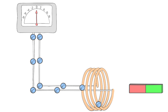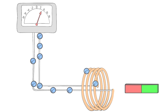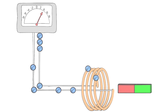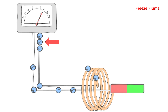If you now approach the bar magnet to the coil, the electrons in the coil flow in a certain direction. As a result, there are more free electrons at the end of the right power cable, which is connected to the voltmeter, than at the end of the left power cable. In this case, the pointer points to the right.